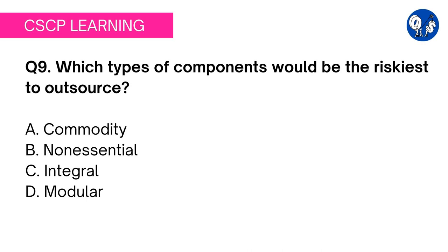Option B: non-essential — there are no secret recipes for non-essential products either, so non-essential goods can be outsourced without risk. Option C: integral design is one in which all components are designed to work together in one specific product, giving a competitive edge due to a secret recipe. Examples include Apple computers and phones. If you outsource the production of a product with an integral design, there is a risk the third party will copy the core design. Examples like Coke, Pepsi, and Miranda — if you outsource production, third parties get to know the formula. Option C integral is the correct answer.